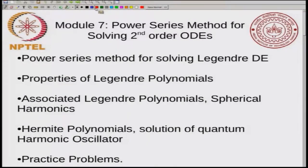After that I will talk about associated Legendre polynomials and how these are connected to spherical harmonics, which is a problem that you encounter in quantum chemistry. Then I will take another problem from quantum chemistry which is the quantum harmonic oscillator and how you use Hermite polynomials to solve this. And then we will finish with some practice problems. So this will be the content of module 7.